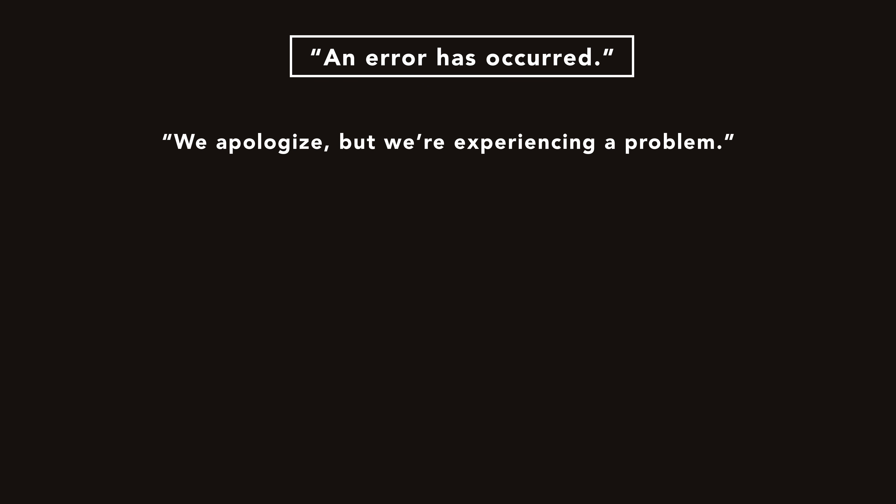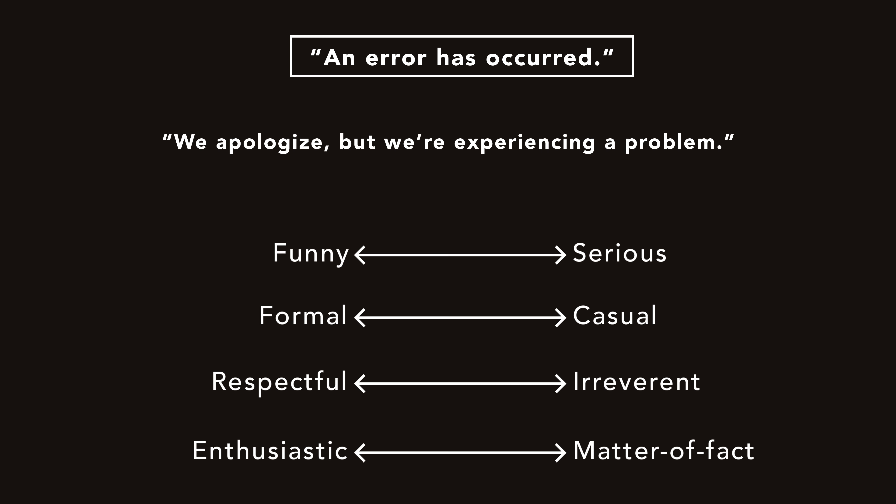To see how we could use those four dimensions to create very different effects, let's look at a single, simple message: 'An error has occurred.' First, let's try a serious, formal, respectful, and matter-of-fact error message: 'We apologize, but we are experiencing a problem.' We're not trying to make users laugh or using any strong emotion — it's a fairly traditional, straightforward error message.